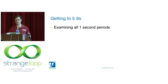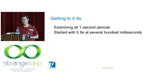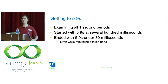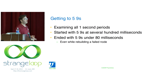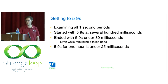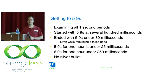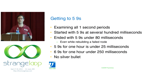For VoltDB, getting to five nines: examining all one-second periods, we started at several hundred milliseconds at five nines and ended at under 80 milliseconds — while building a failed node, which is the worst-case scenario. In regular operation for a one-hour benchmark, we're at 25 milliseconds at five nines and under 250 milliseconds at six nines. We're still not at the theoretical floor, because there's no silver bullet. Continuing work would involve looking at environmental noise from Linux, setting up OProfile, and getting that into continuous integration.